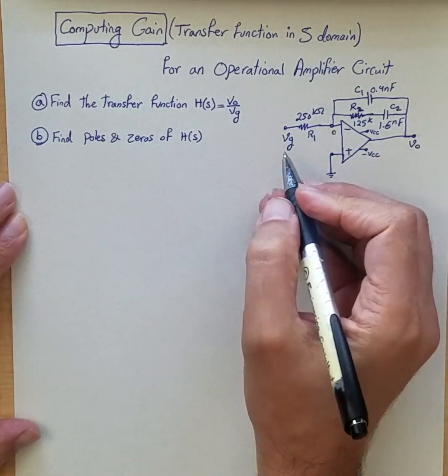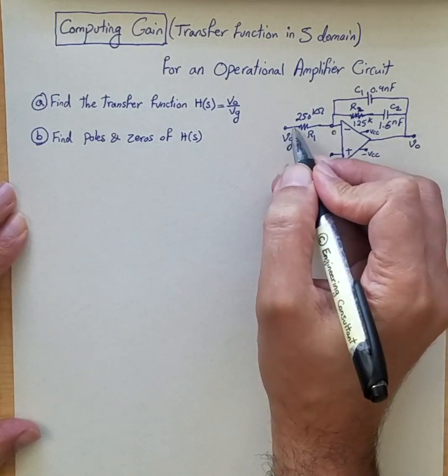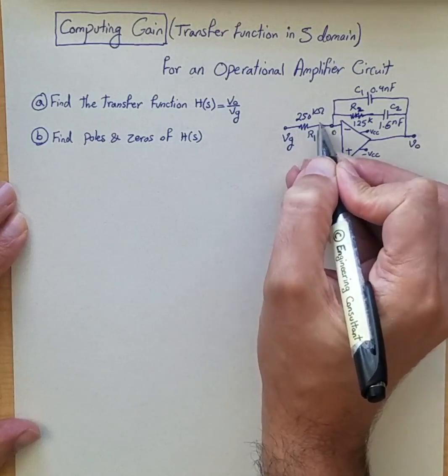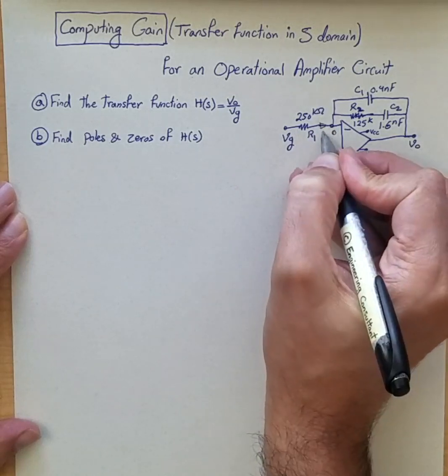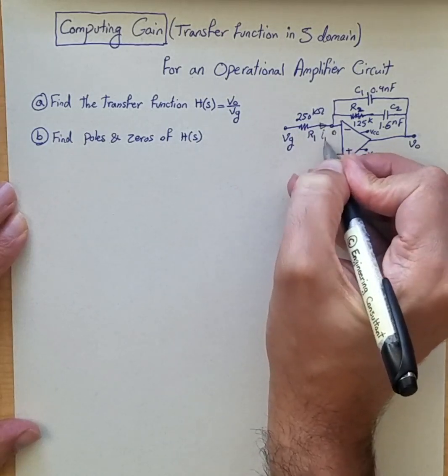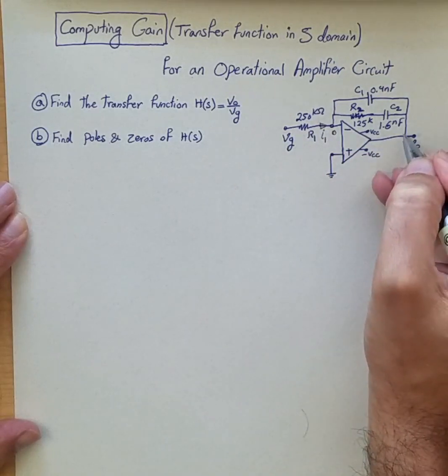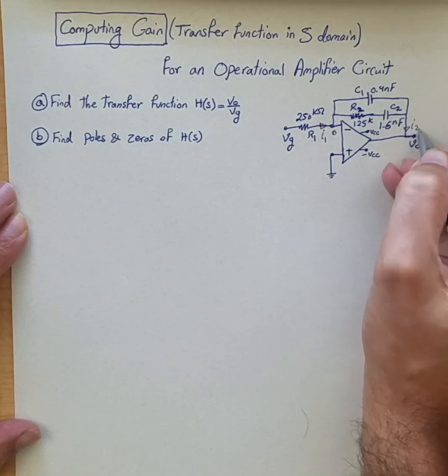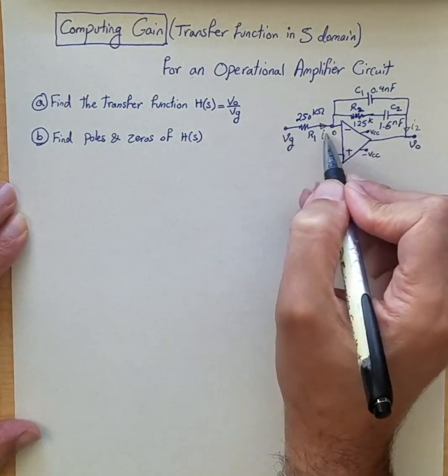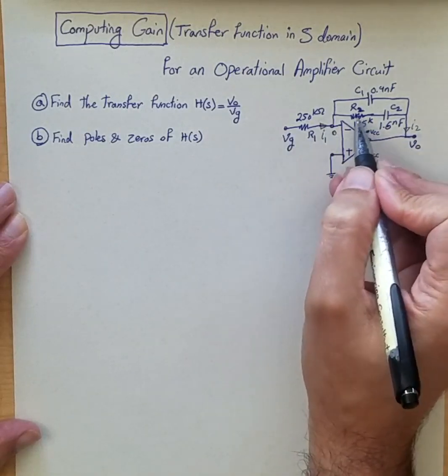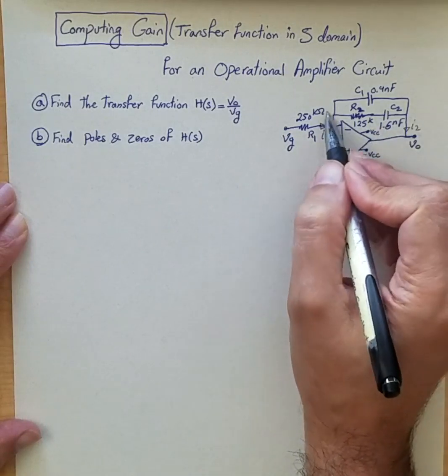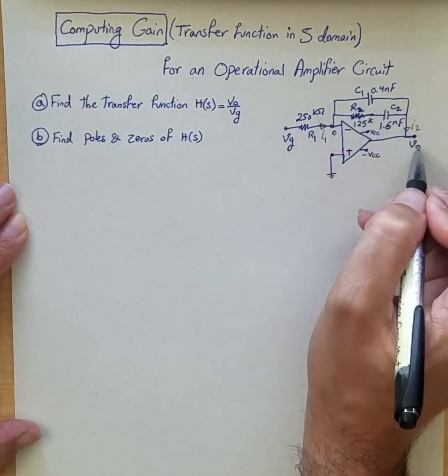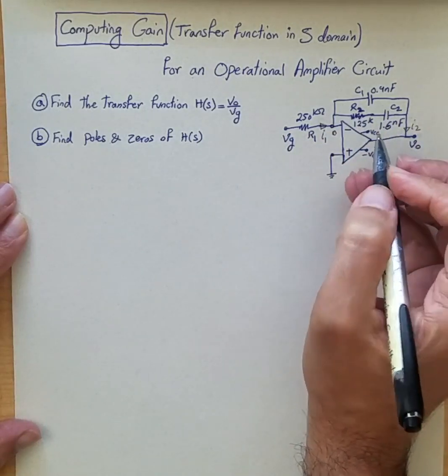Okay so because of that, then the current that is flowing from input, input current, so let's say I1 has to be the current that is flowing to the output so toward Vout. So basically this current is flowing through R1 and then through the whole equivalent resistance that is here and then goes to Vout or equivalent impedance.